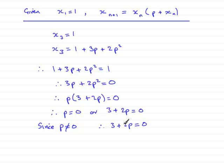So if we subtract 3 from both sides, we end up with 2p equaling negative 3. And if we divide both sides by 2, we end up with p equaling minus 3 over 2. So that is the value of p.